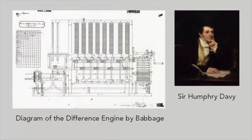In 1822 Babbage wrote a letter to one of the top British scientists of the day, Humphrey Davy, in which he talked about the design of an automatic calculator. Shortly after, he was given a grant by the British government to build this device — an elaborate symphony of rods and interlocking gear teeth.